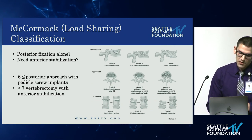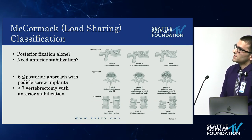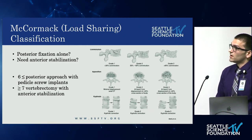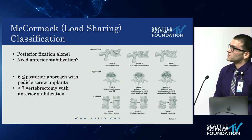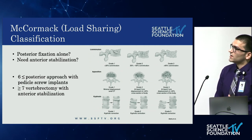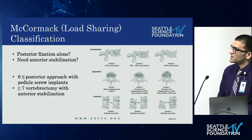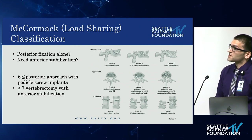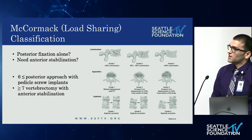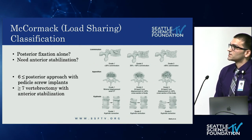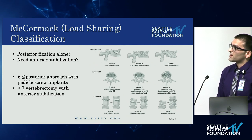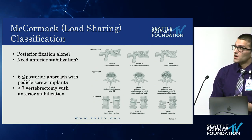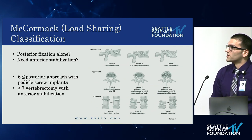In closing, I want to talk about the McCormick Load Sharing Classification. This was developed to help decide if posterior fixation alone is sufficient or if the patient also needs anterior stabilization. You're looking at comminution, apposition of the fragments, and kyphosis correction. If you have a score greater than seven, vertebrectomy or corpectomy with anterior stabilization is recommended, though other factors such as patient age and comorbid conditions also play a role.